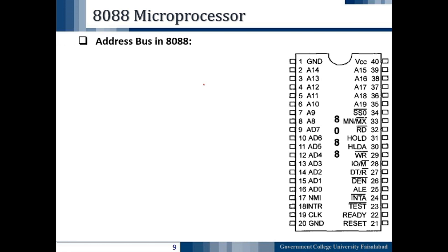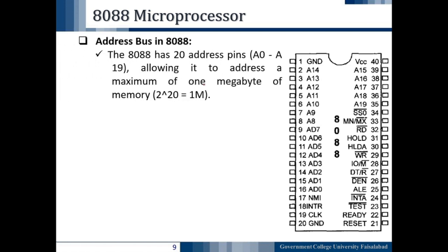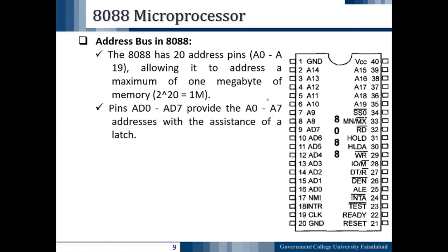The 8088 IC has 20 address pins from A0 to A19, allowing it to address a maximum of one megabyte of memory. This one megabyte can be calculated from the formula 2 raised to the power of the address bus size. The pins AD0 to AD7 (pin numbers 9 to 16) provide address A0 to A7 with the assistance of the latch 74LS373, which is responsible for the latching action and the demultiplexing of the address and data pins.